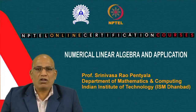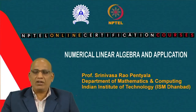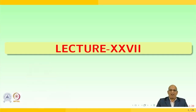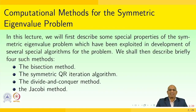Welcome to the course on Numerical Linear Algebra and applications. Today we are going to have the 27th lecture. Before going to the 27th lecture, let us quickly recall what we did in the last lecture. In the previous lecture, we were doing what we call Hessenberg transformation, which is essentially to decompose the matrix A into a product of two matrices so that we could obtain the best approximate solution.